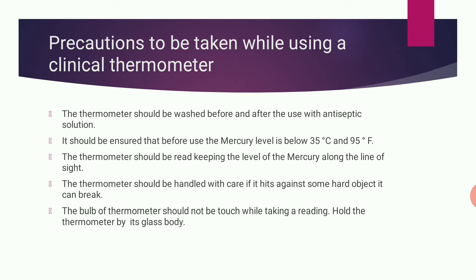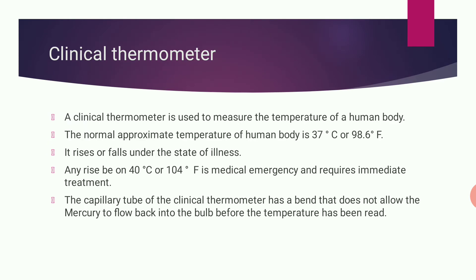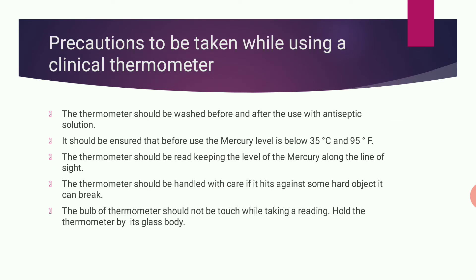Precautions to be taken while using the clinical thermometer: the thermometer should be washed before and after use with an antiseptic lotion. It should be ensured that mercury comes below 35 degrees centigrade or 95 degrees Fahrenheit before use. The thermometer should be read keeping the level of mercury along the line of sight. The thermometer should be handled with care — if it hits a hard object, it can break. The bulb should not be touched while taking the reading; hold the thermometer by the glass body.